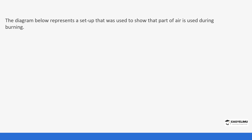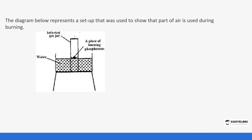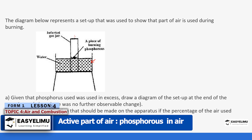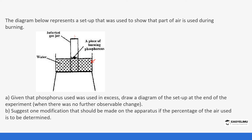Let's do one more question. The diagram below presents the setup used to show that part of air is used during burning — an inverted gas jar with a piece of phosphorus placed on an evaporating dish sitting on a water trough. Question: given that phosphorus was used in excess, draw a diagram of the setup at the end of the experiment where there is no further observable change — showing the water levels inside the jar and in the trough.